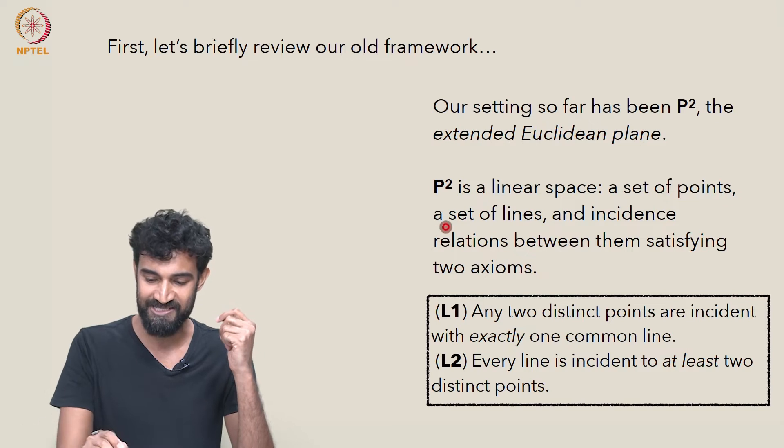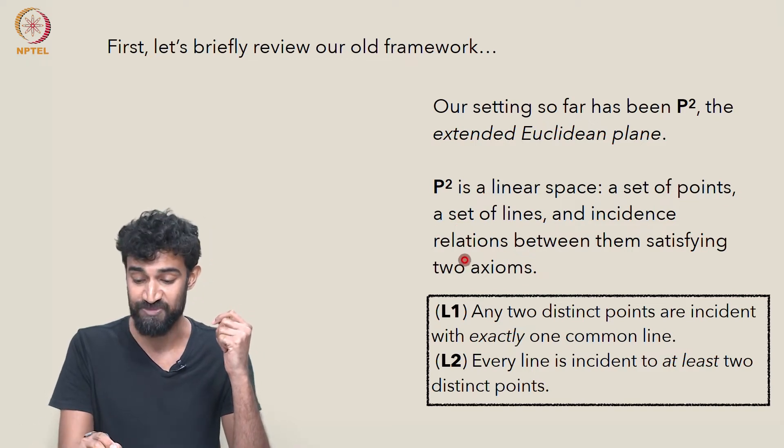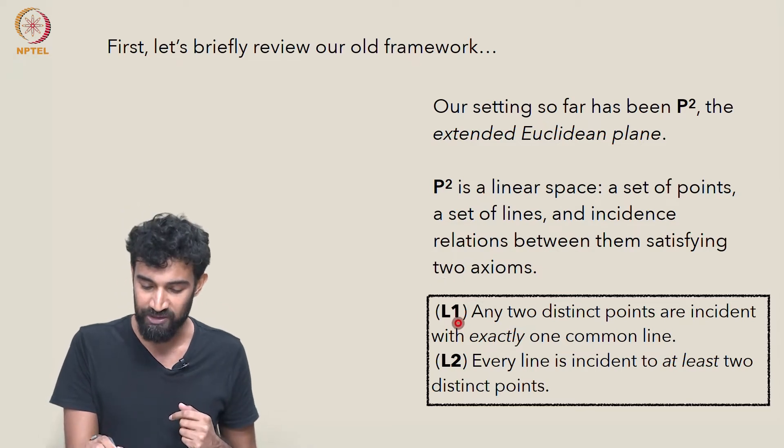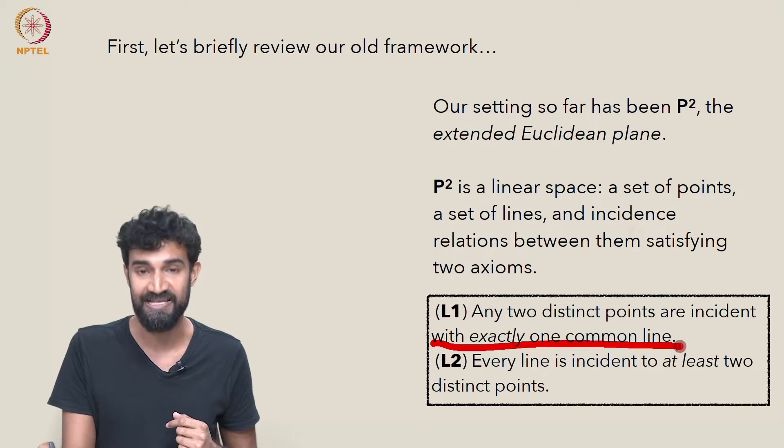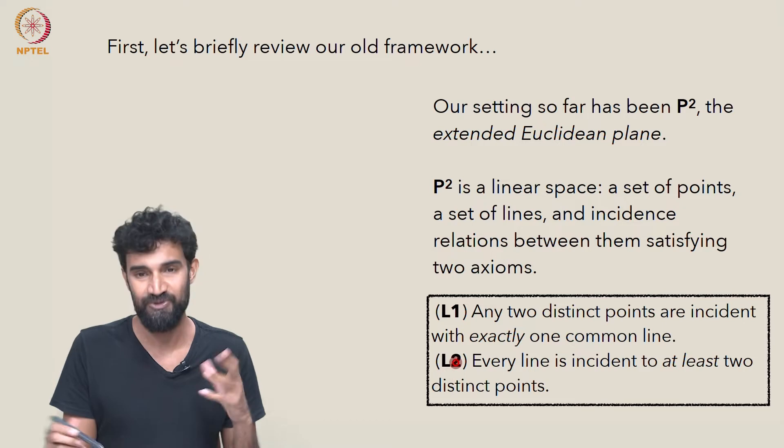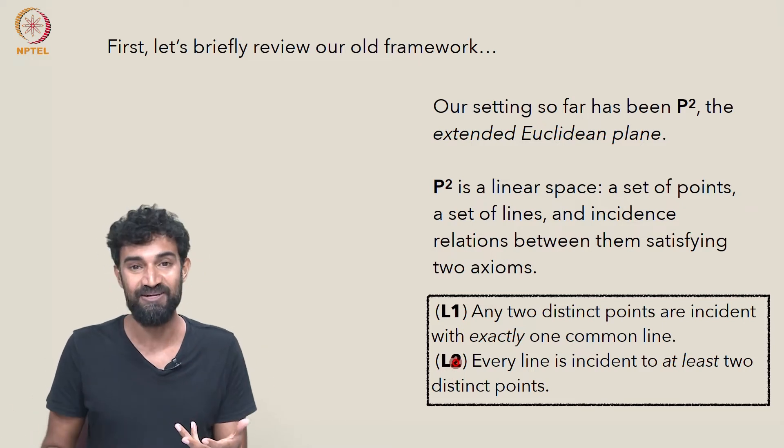It's a set of points, a set of lines, and incidence relations between those points and lines, which satisfy two axioms. L1, which states that any two distinct points are incident with exactly one common line. And L2,